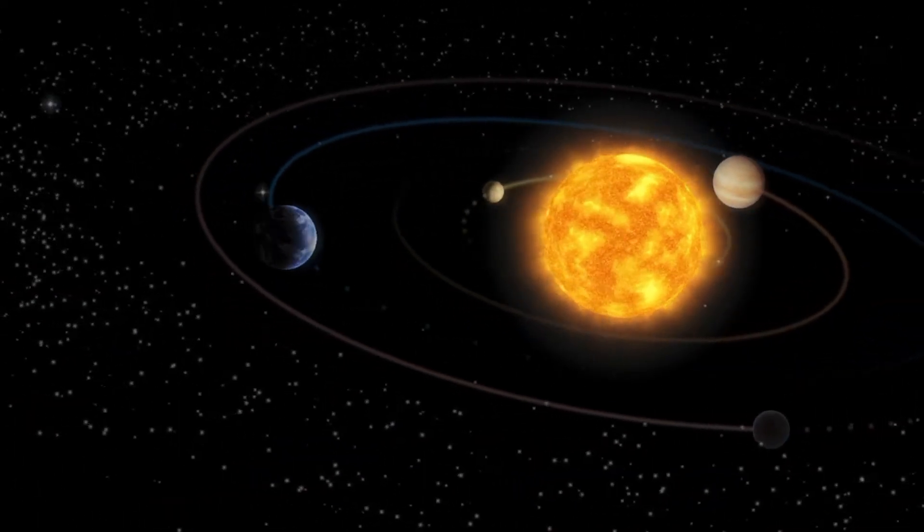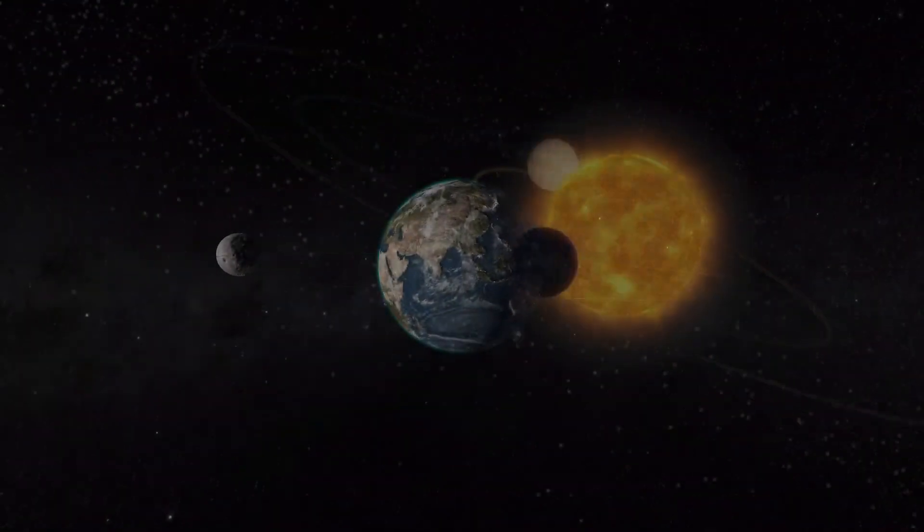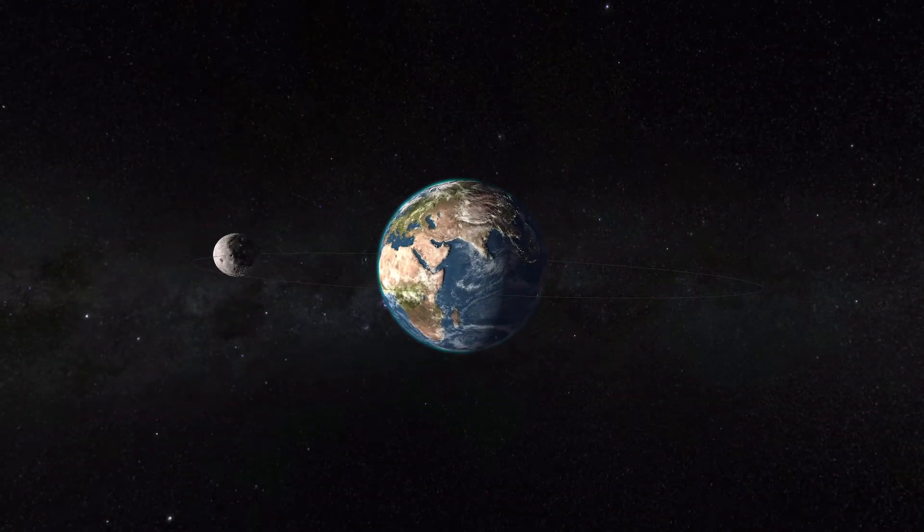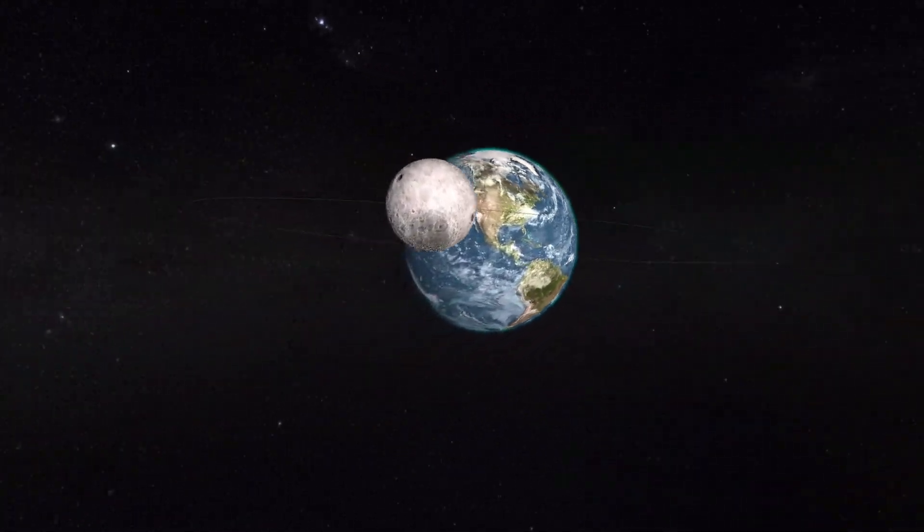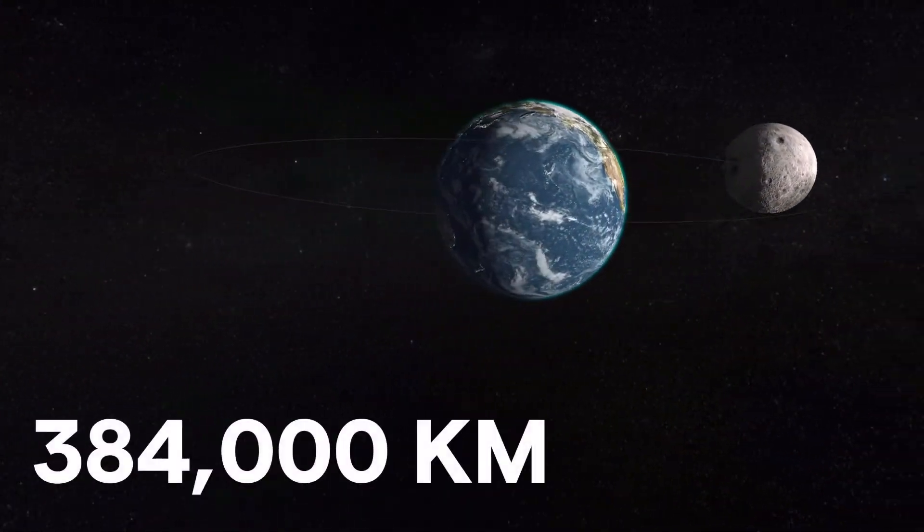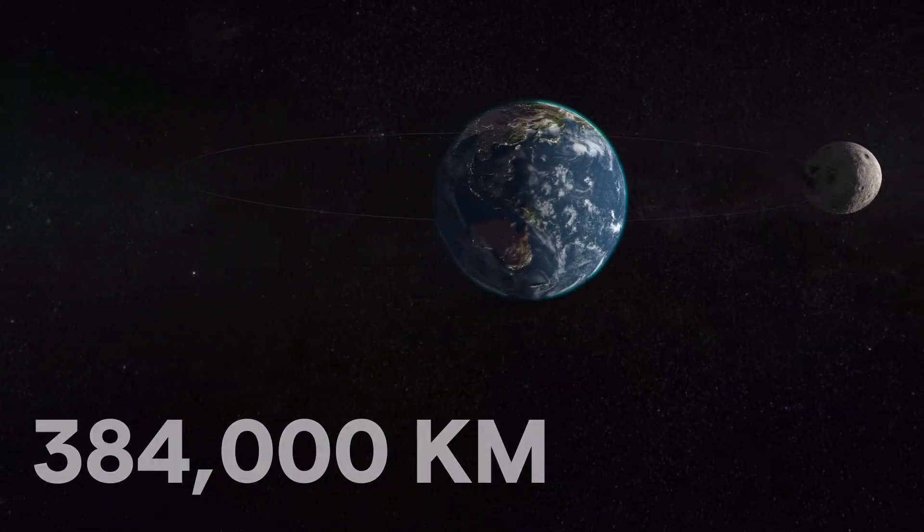While the Earth revolves around the Sun each year, the Moon is revolving around the Earth at a distance that also varies somewhat over the course of a month, but averages out to about 384,000 kilometers.